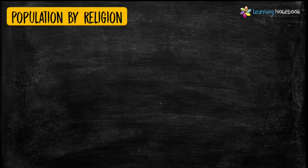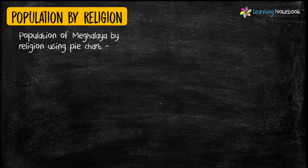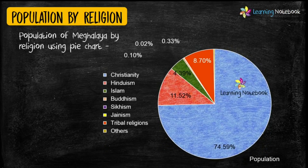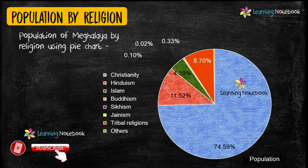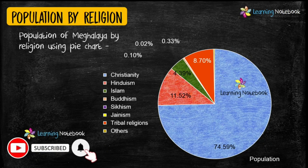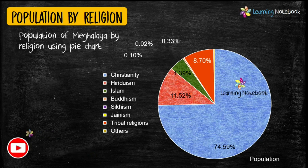Students, a pie chart is another beautiful way to represent the given data. So you may use a pie chart to show the population of Meghalaya by religion.